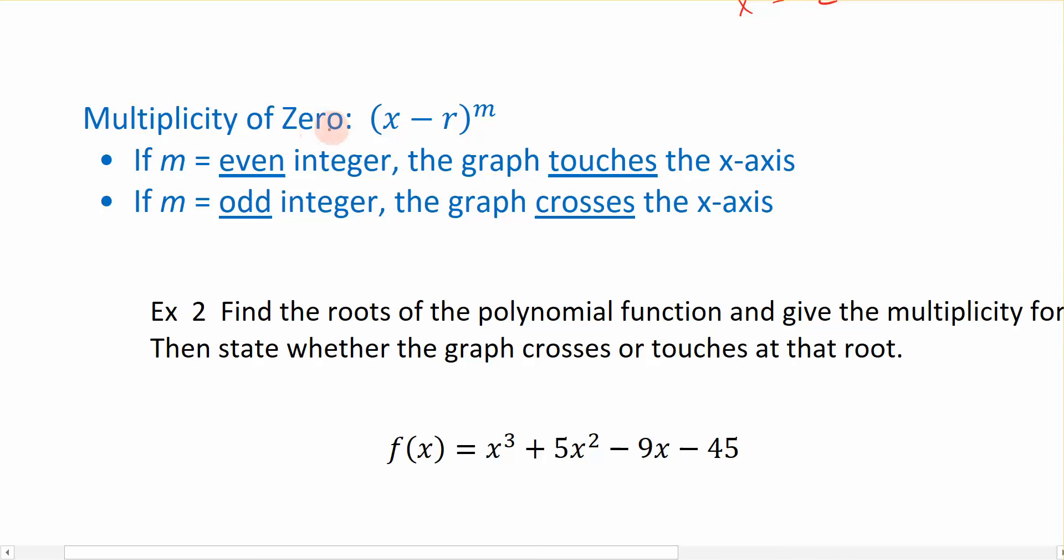We have this idea that the multiplicity of zero says if this is my factor, remember x minus r is my factor, and it is raised to any power, when the power that it's raised to is even, then the graph touches the x-axis, and when the power it's raised to is odd, then we cross. So if it's even, we touch. If it's odd, we cross. And that's what we're going to look at in these two examples.